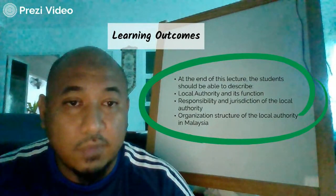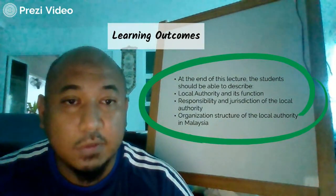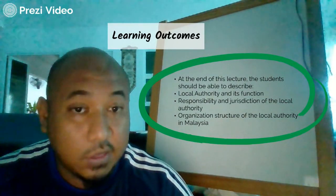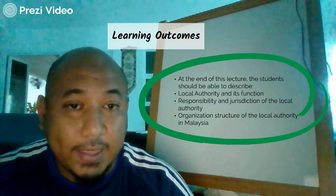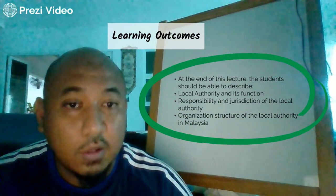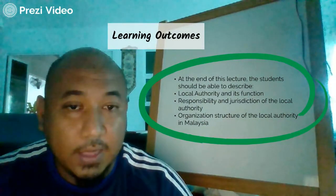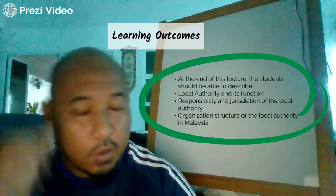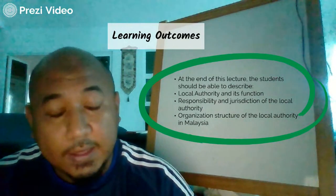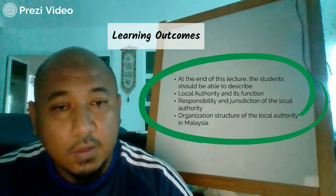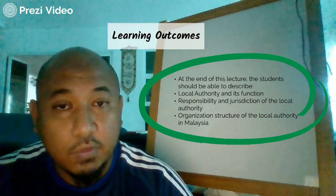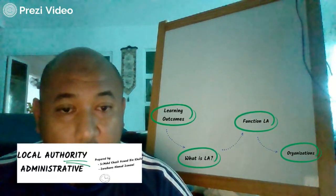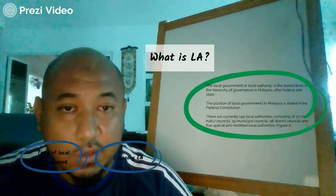The learning outcomes — at the end of these lectures, the student should be able to describe what is the local authority and its functions. The student should also understand the responsibility and jurisdiction of the local authorities, and the organization structure of the local authority in Malaysia, including the divisions within local authorities.